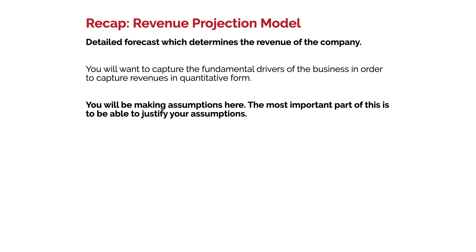So let's quickly recap what we saw in the last video. We need to start with a revenue projection model, which details the forecast and determines the revenues of the company. You want to make sure you are capturing the fundamental drivers of the business in order to capture revenues in a quantitative form. Remember, it's art and a science together — you are making assumptions and need to be able to justify them. We discussed two methods: the bottom-up method and the top-down method. Both are applicable for building your revenue projection model.